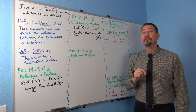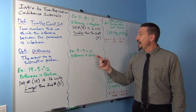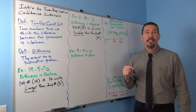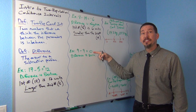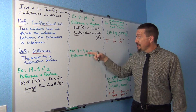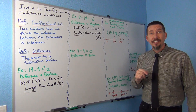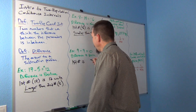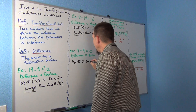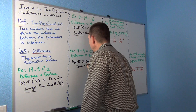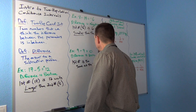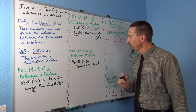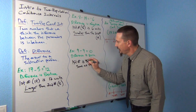Now what about if the difference was zero? If I have 9 minus 9, that's 0. When the difference is zero, it tells you the two numbers are the same. The first number is the same as the second number.